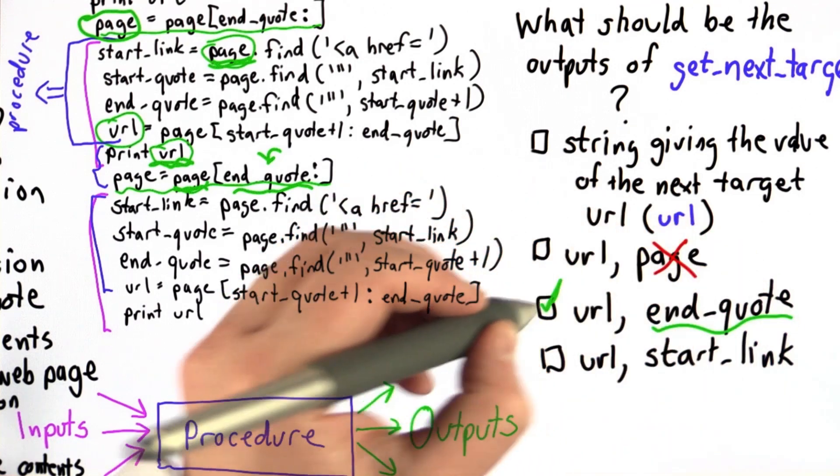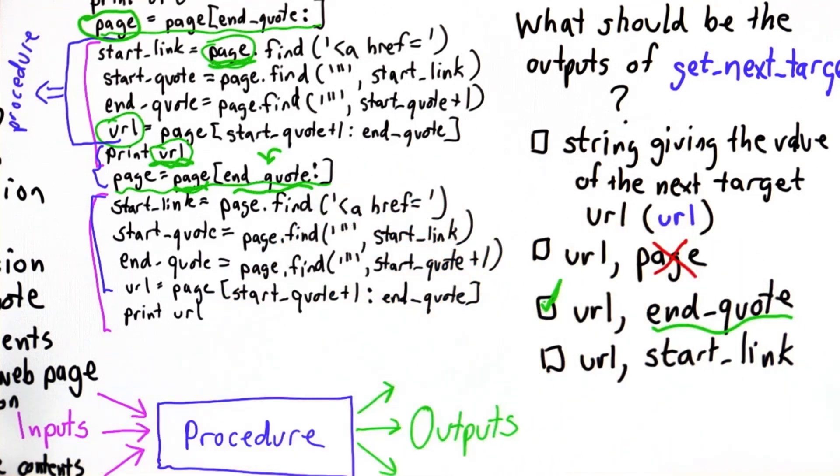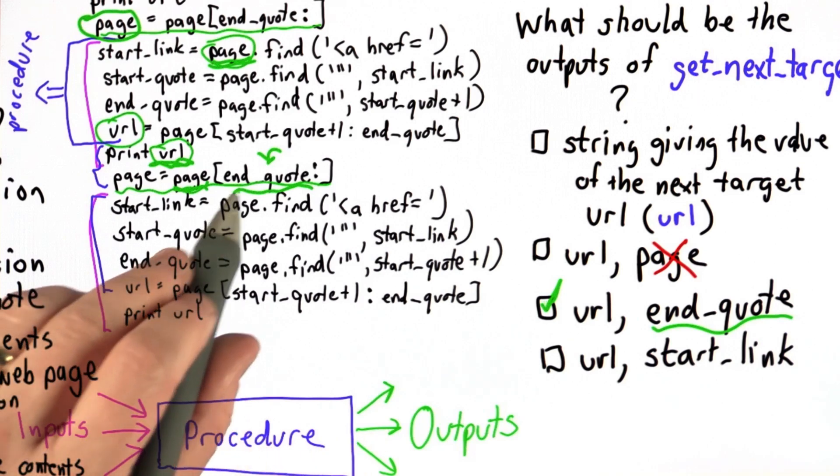So this is the best answer to this question is that we need two outputs. We need both the URL and the value of end quote.